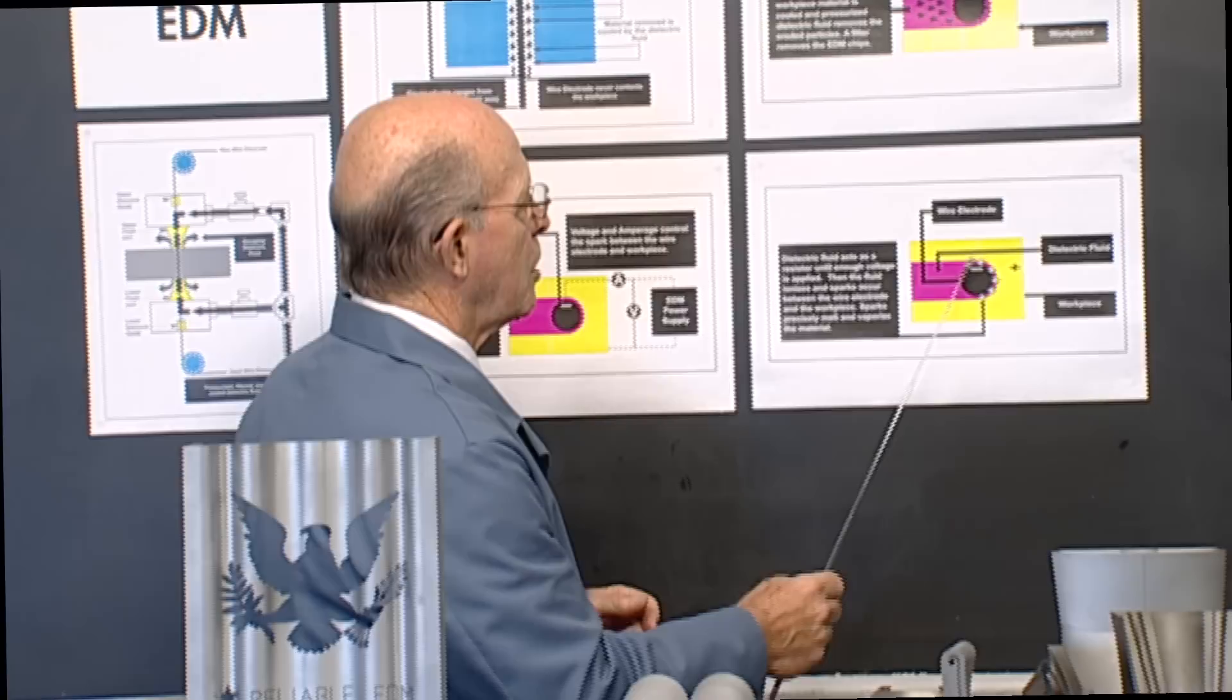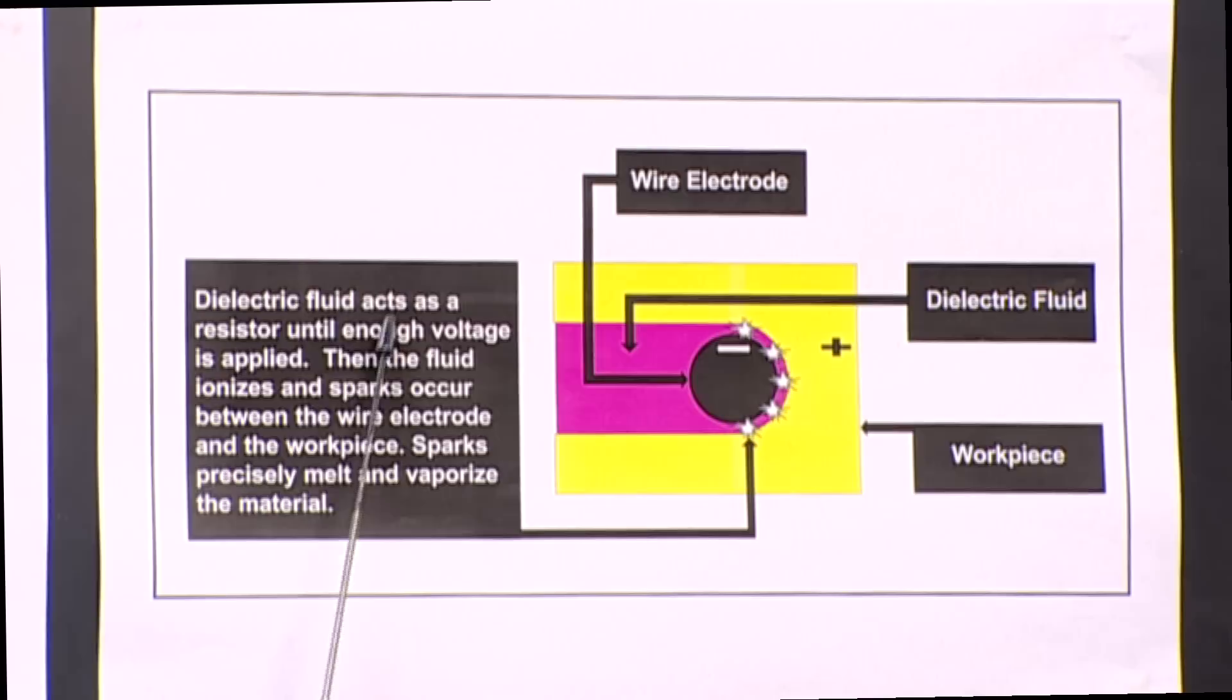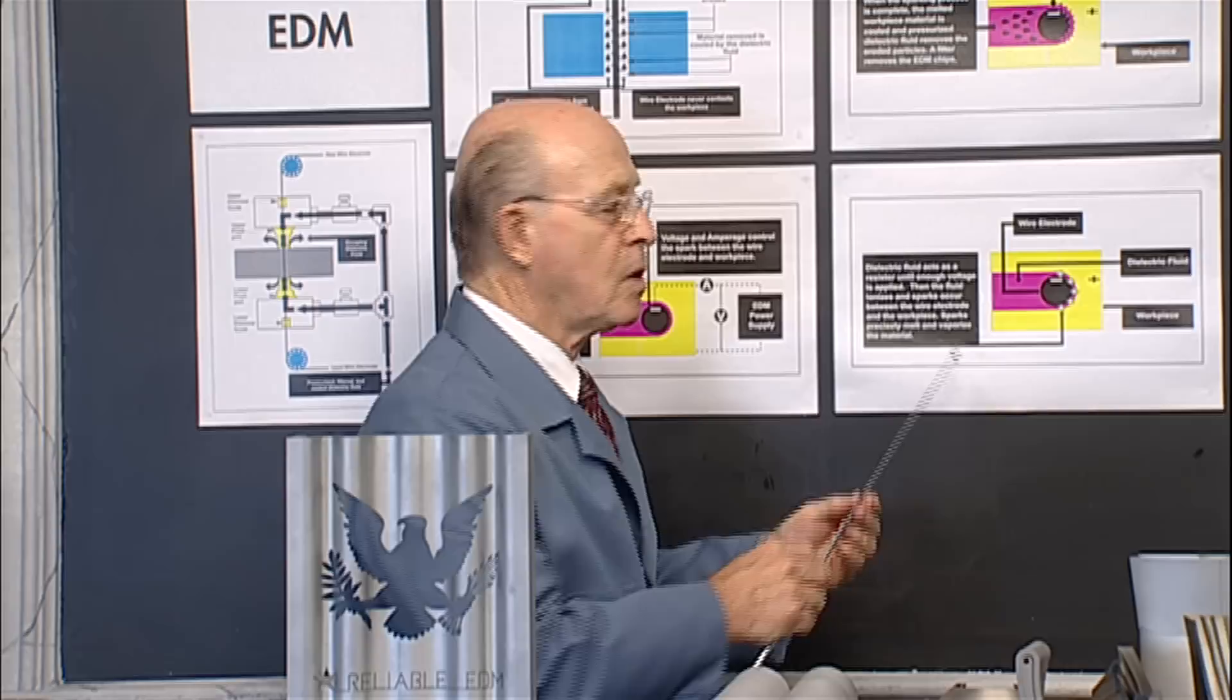Now let's see what happens when the sparking takes place. Here again is the wire electrode. This is the dielectric fluid. This is the workpiece.